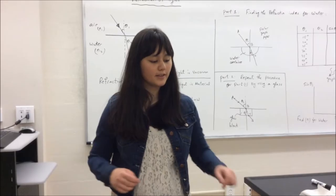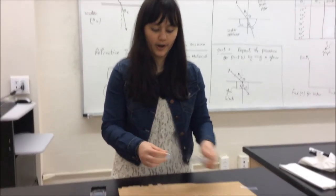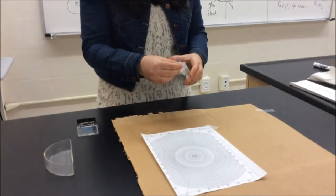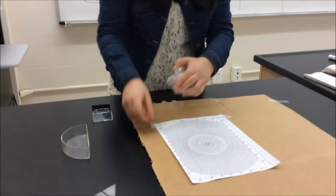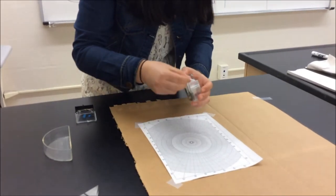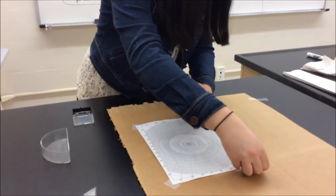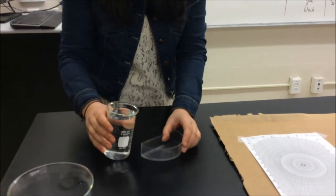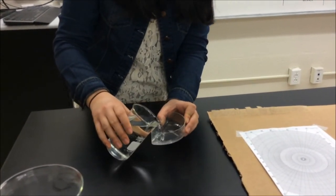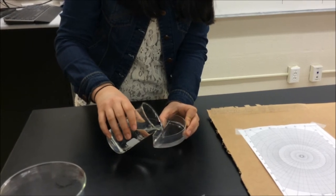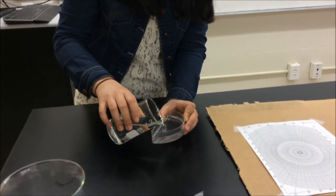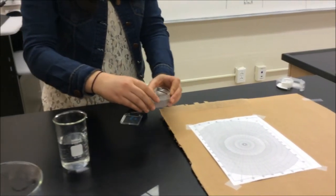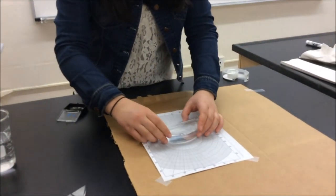The first thing you're going to do is tape your polar graph paper down so that it doesn't move off the cardboard. Then you're going to pour the water into the container so that it's almost full, and then place the container onto the polar graph.